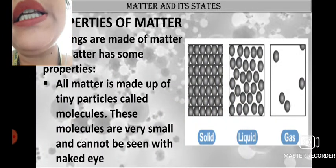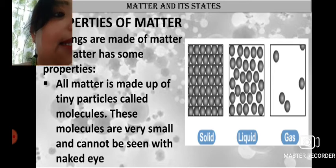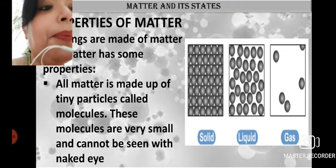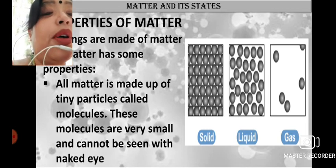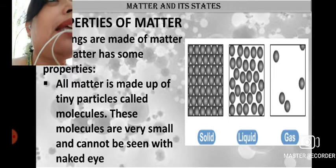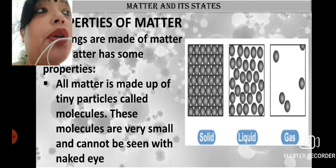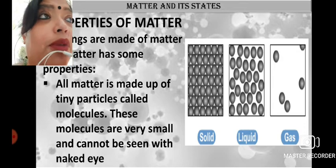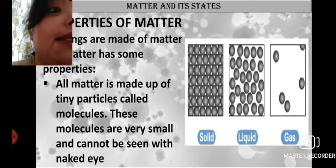Next we come to the properties of matter. A property means some special characteristics. All matter is made up of tiny particles called molecules, and these molecules are very small and cannot be seen through the naked eye. We need special apparatus to see them. The concept of the molecule will be learned better in higher classes, but all matter is made up of small molecules.